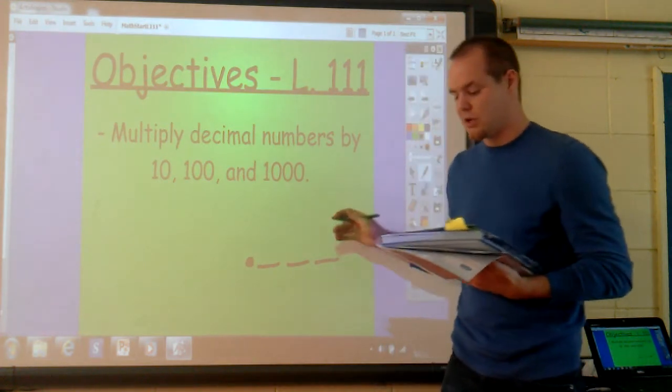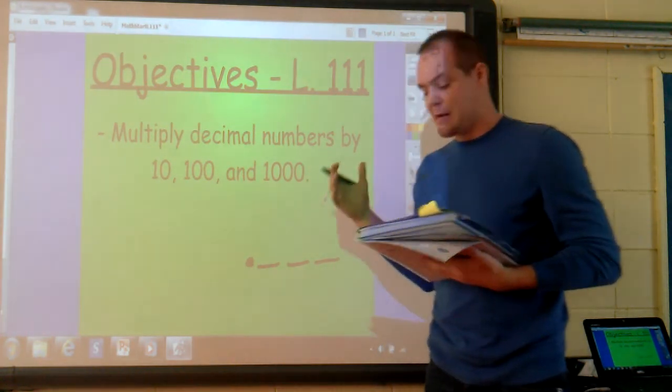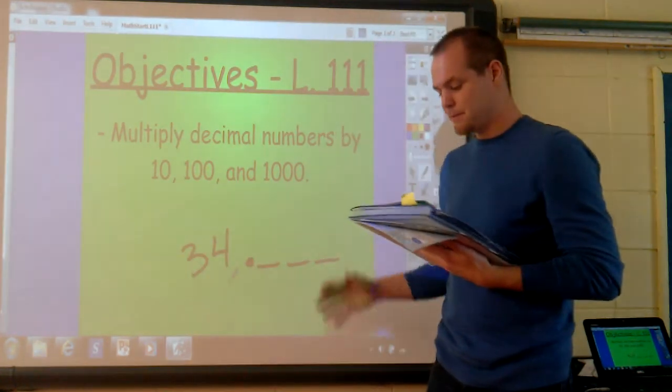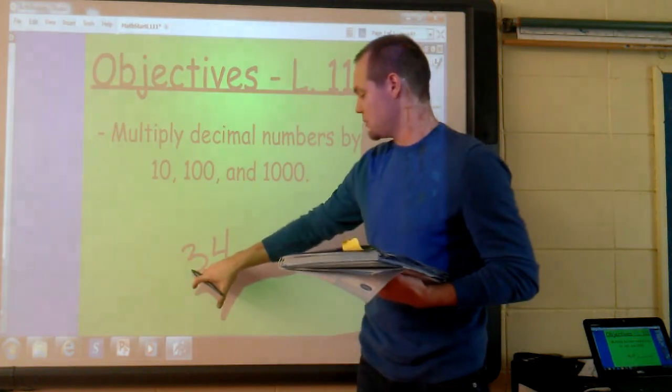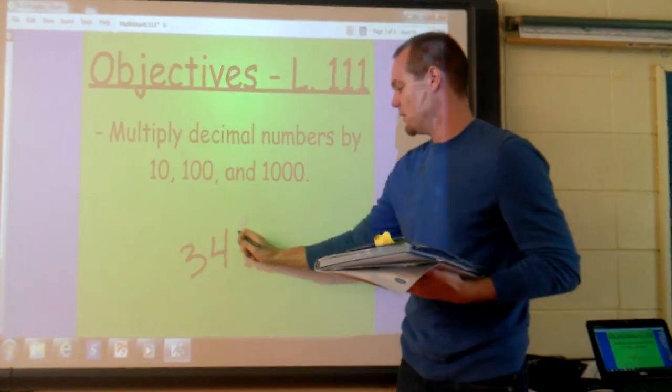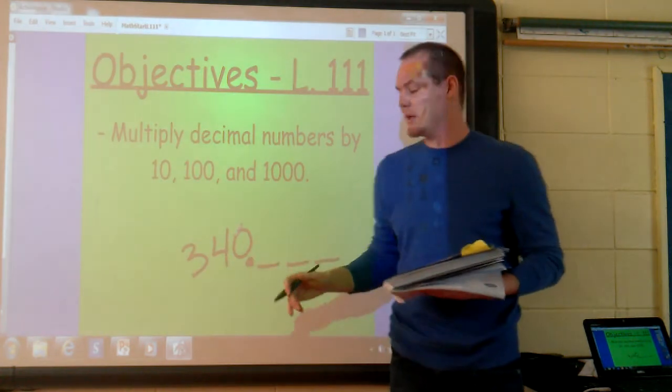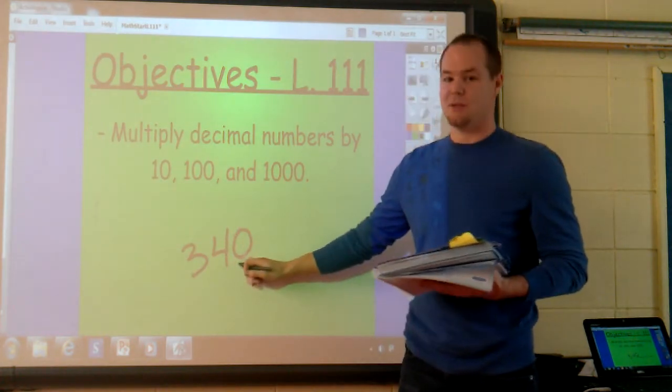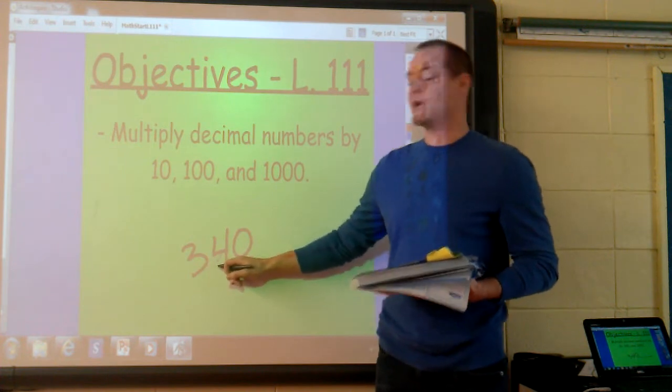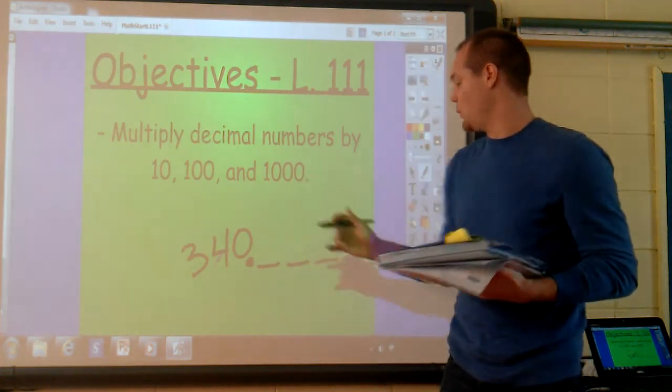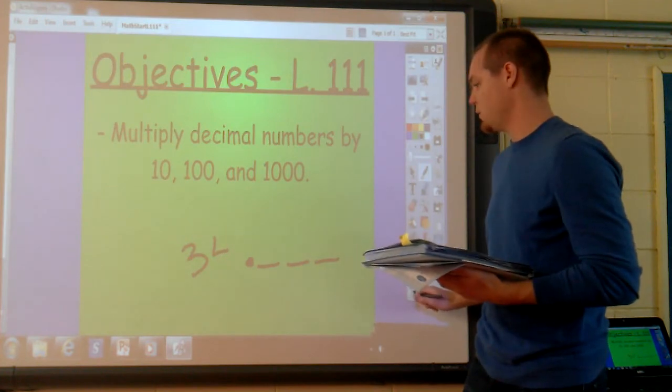The digits all shift one place to the left. For example, when we multiply 34 by 10, all of the digits move one place value to the left. If we multiply it by 10, our number would be 340. Basically, the 4, which was in the 1's place, becomes the 10's place. The 3, which was in the 10's place, now becomes the 100's place. They shift one place value to the left.